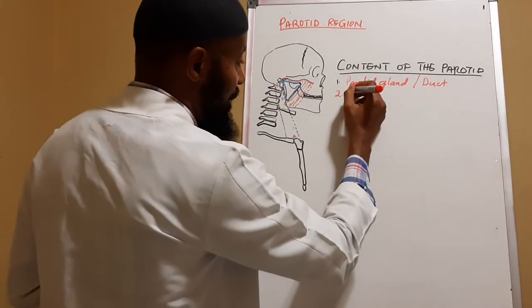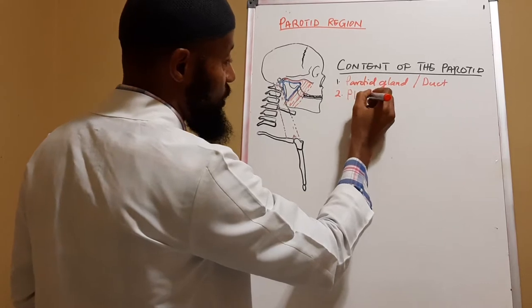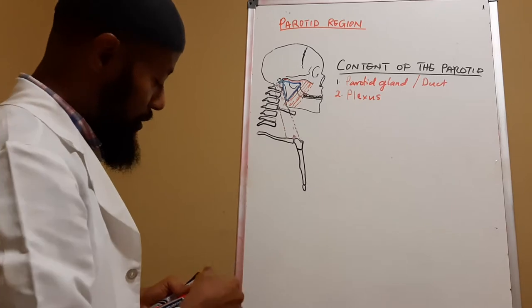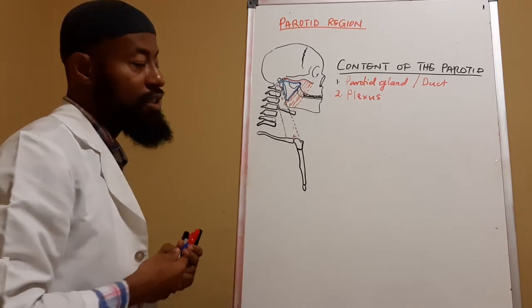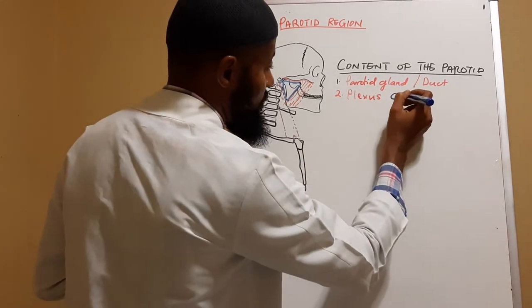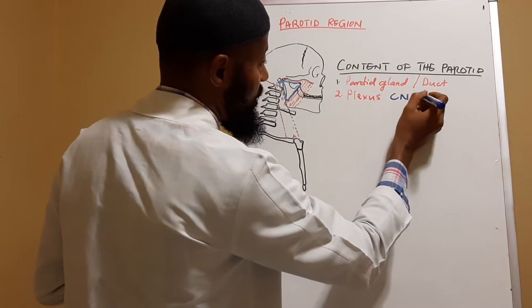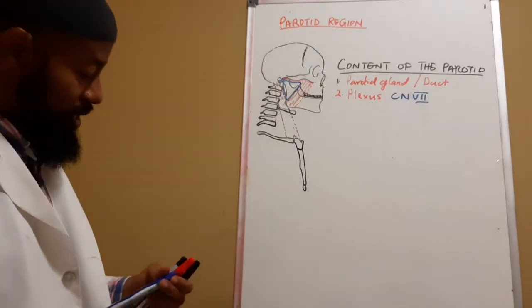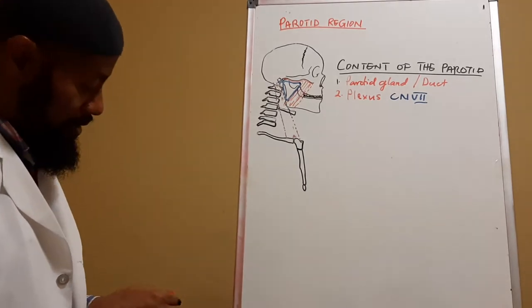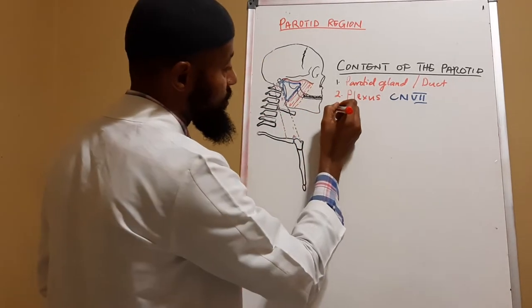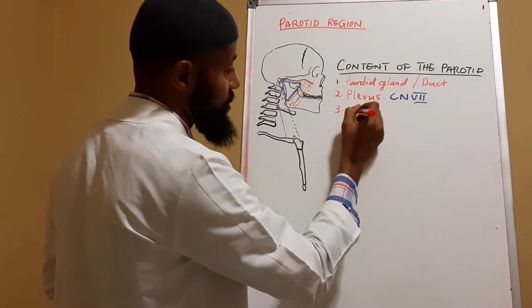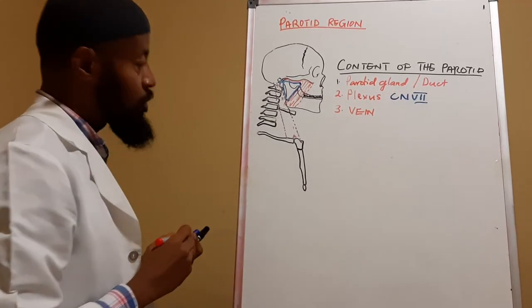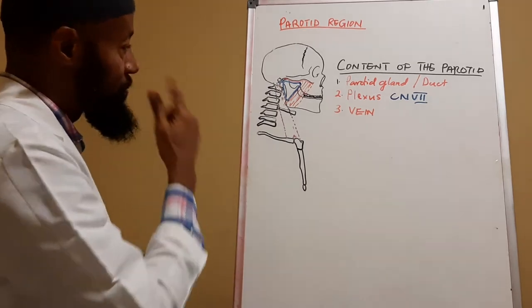Number two content is the plexus found there, which is the parotid plexus. The parotid plexus is derived from the facial nerve — CN VII. Number three content is a vein, and that's the retromandibular vein.